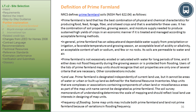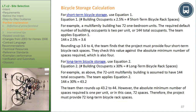Users of the prime farmland map units list should recognize that soil properties are only one of several necessary criteria. Other considerations include land use — prime farmland is designated independently of current land use, but it cannot be areas of water or urban or built-up land as defined for natural resource inventories. Map units that are complexes or associations containing urban land components cannot be designated as prime farmland. The soil survey memorandum of understanding determines the scale of mapping. Some map units may include both prime farmland and non-prime farmland because of variations in flooding frequency.